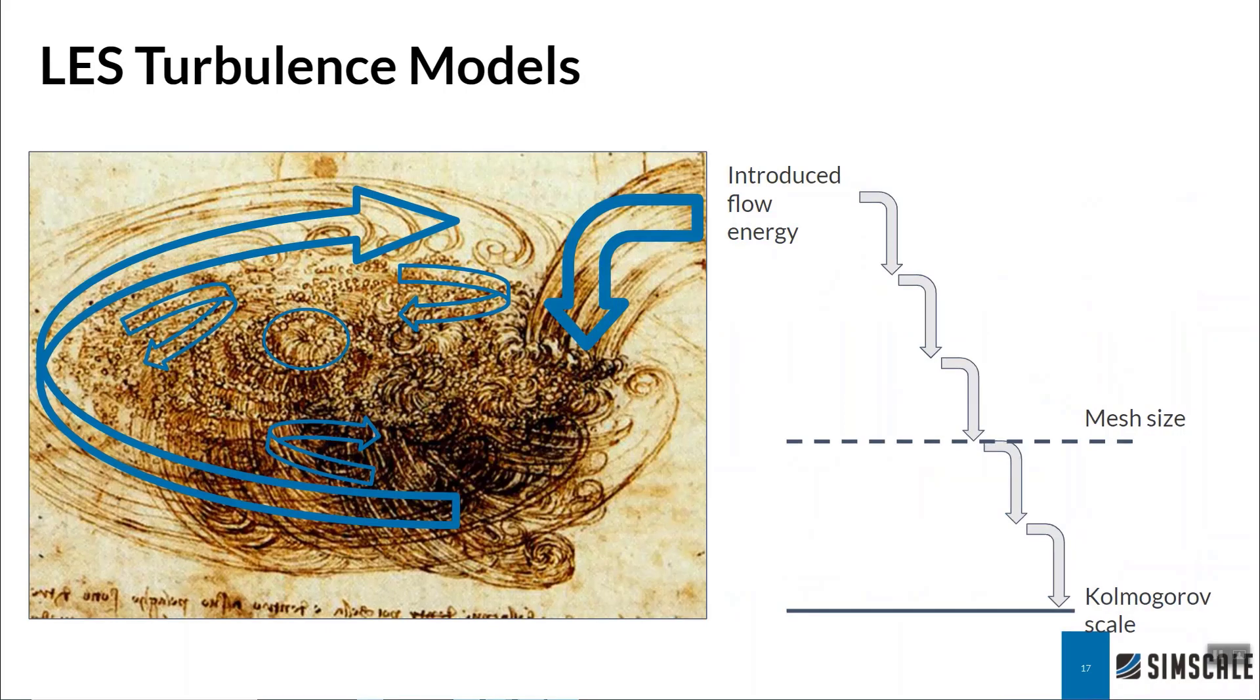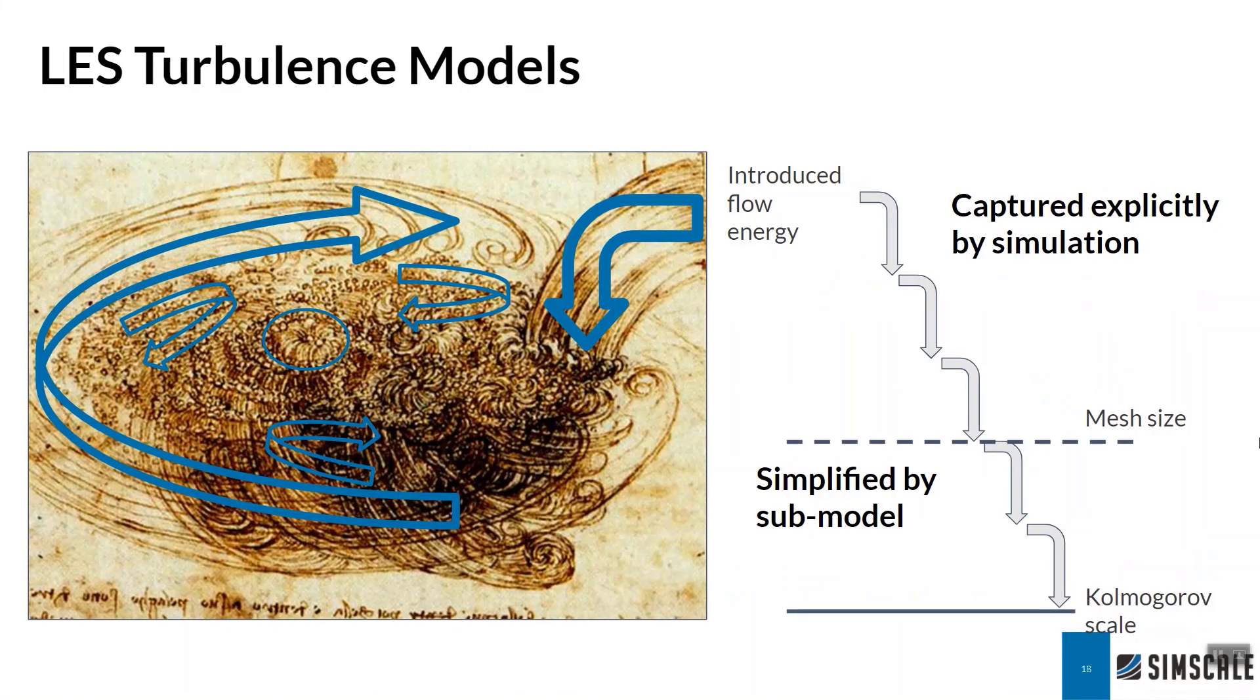The other main family of turbulence models, being the large eddy simulation, uses the base principles of turbulence. As I mentioned, we have this energy cascade where most of the energy is introduced and contained within these larger eddies, and it breaks down into smaller and smaller eddies. Furthermore, typically only the larger eddies are dependent on the overall geometry or flow pattern, while as we get smaller and smaller they become more and more isotropic. So what the LES family does is it captures those larger eddies explicitly via our simulation, and anything that falls under our mesh size, meaning we cannot capture it, then it is simplified by some submodel, could be a RANS submodel.